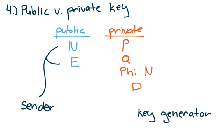The key generator, on the other hand, has access to all six values, since he or she is the one who, in fact, created the values for all six variables. However, the key generator will really only use the values of D and N to decrypt a message that's sent to him or her.